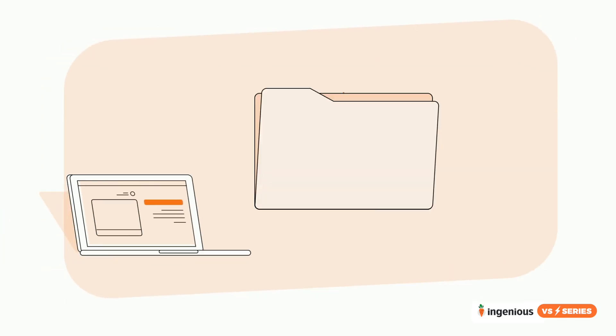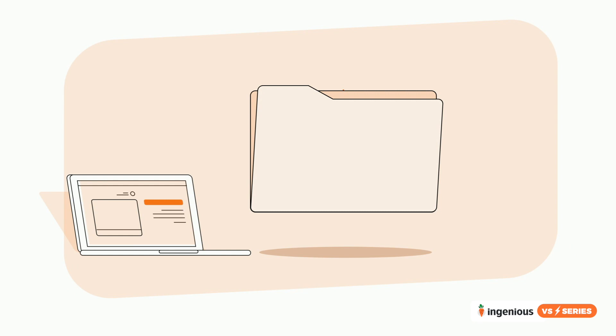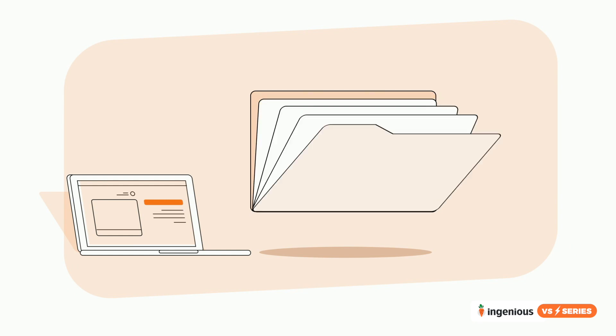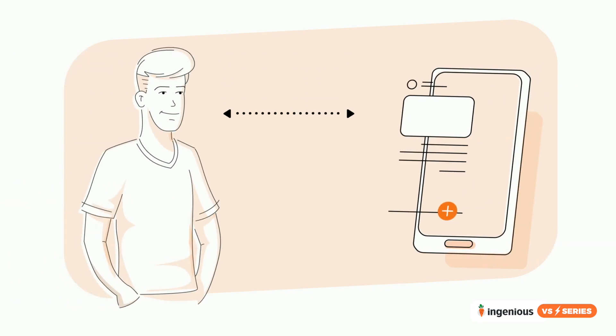UI stands for User Interface, as you probably heard, and it's basically a language to enable communication between a human being and a system. When we see a folder icon in our computer, we understand that we are supposed to put items in there that make sense with each other, so there's a lot of implicit communication going on between us and the system that is taken care of by this language.